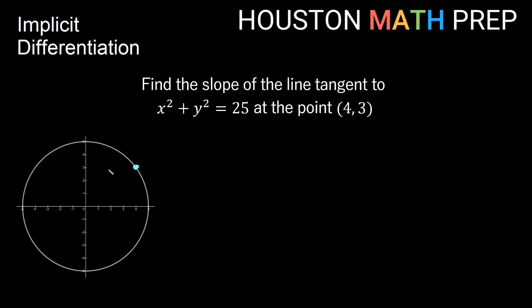You'll notice this is not actually a function — a circle is not a function. In order to treat pieces of the circle like a function, if we solve this for y, which is not terribly bad, we subtract the x squared to the other side, and then getting rid of the square on y, we take the root of both sides and get that y is either plus or minus the square root of 25 minus x squared. It's not terrible, we can certainly do that, but now this is two different functions, because this circle by itself doesn't pass the vertical line test.